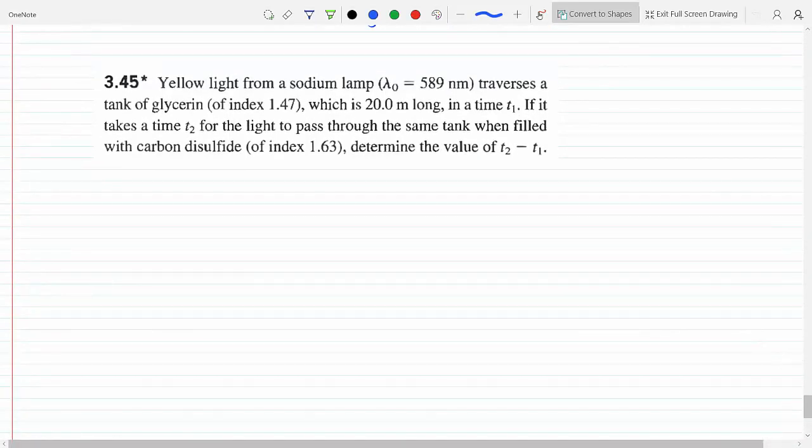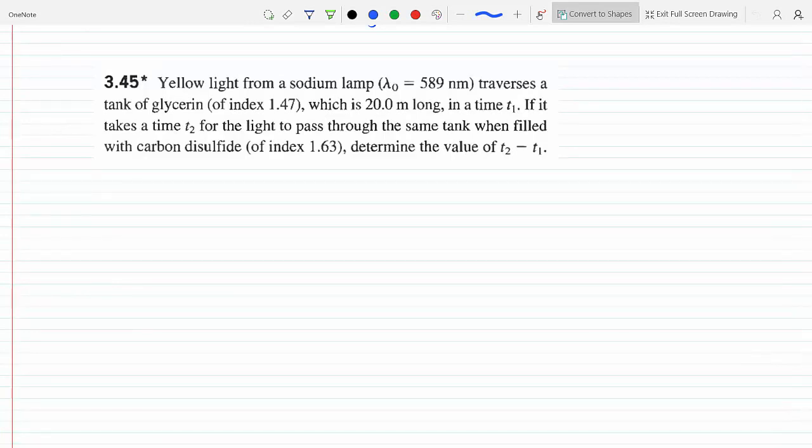Okay, so yellow light from a sodium lamp traverses a tank of glycerine. The index of refraction is 1.47, 20 meters long. Time t1, takes t2 to pass through the same tank when you fill it with carbon disulfide, index 1.63. Determine the value of t2 minus t1. So it's just the difference between the two times.